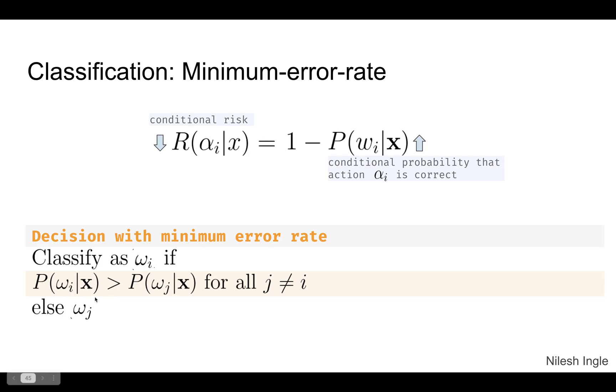Thus the decision with minimum error rate is given here. We want to classify the sample as belonging to the class omega i if the posterior probability for omega i given x is greater than that of the posterior probability for omega j given x, and this is for when i is not equal to j.